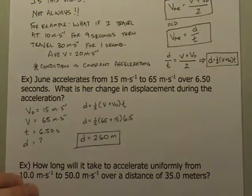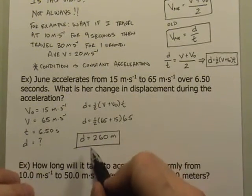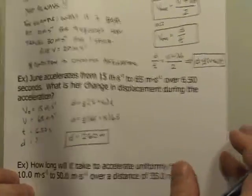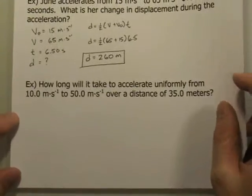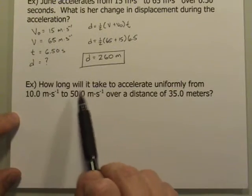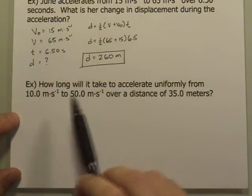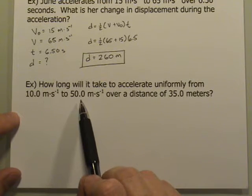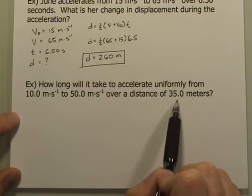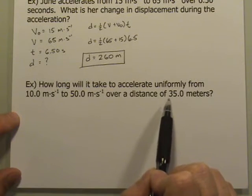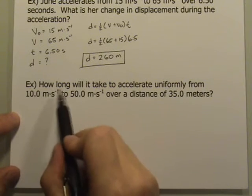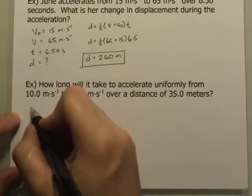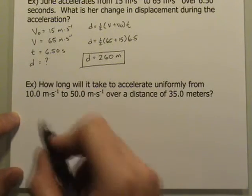However, just to remind you, the equation can be used to solve for any one of the four variables. So let's look at an alternative version of this in which we're not solving for the displacement, but instead one of the other variables. So how long will it take to accelerate uniformly from 10 meters per second to 50 meters per second over a distance of 35 meters? So in this one, rather than the time, we've actually been given the displacement, or in this case, the distance, and we're being asked to look for how long. We're looking for the time.